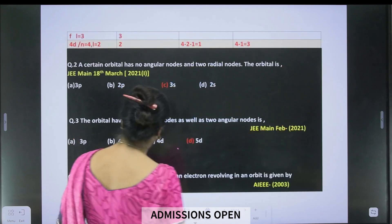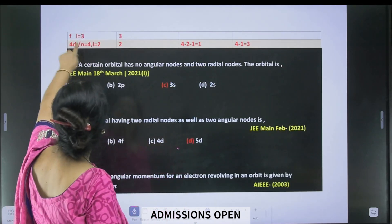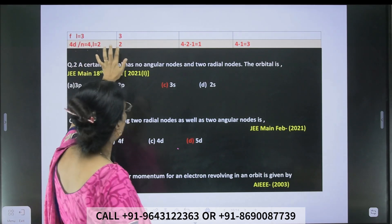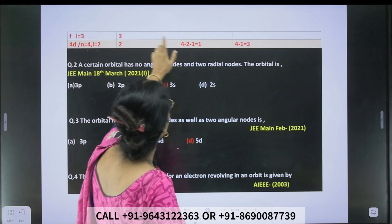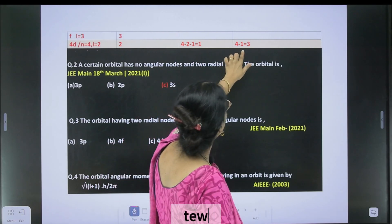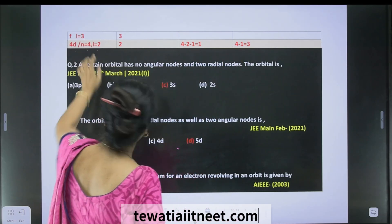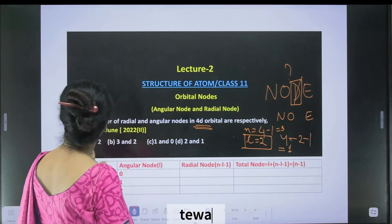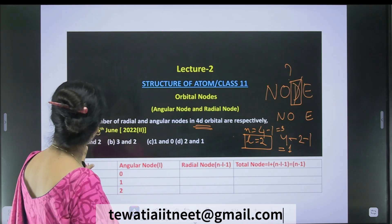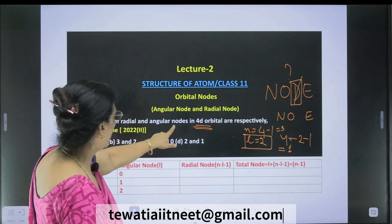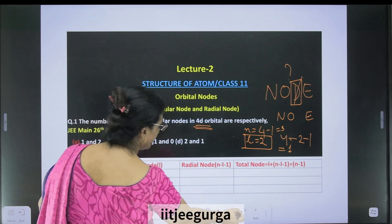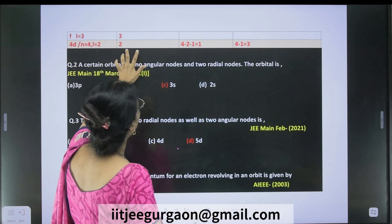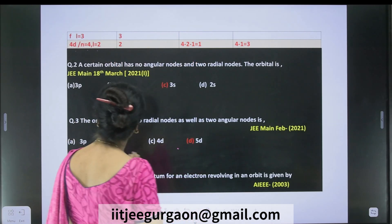So for 4d, n = 4 and l = 2. The angular node is 2, the radial node is 1, and the total node is 3. The question asks for radial and angular nodes respectively, and the answer is 1 and 2.